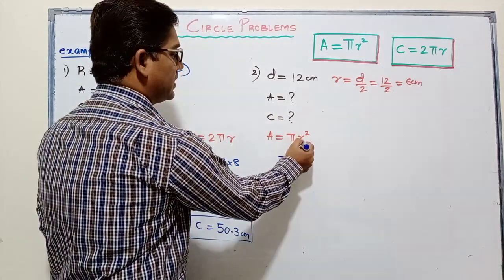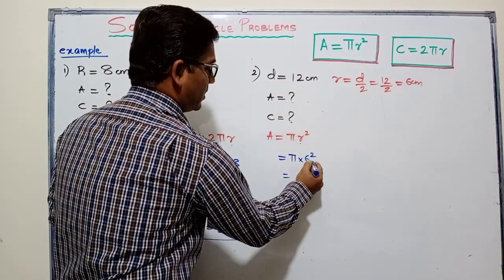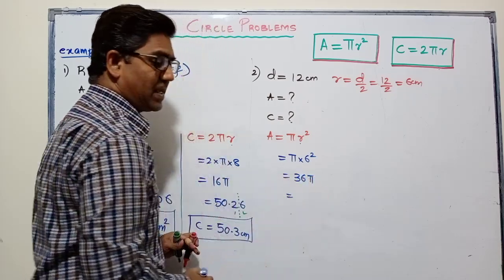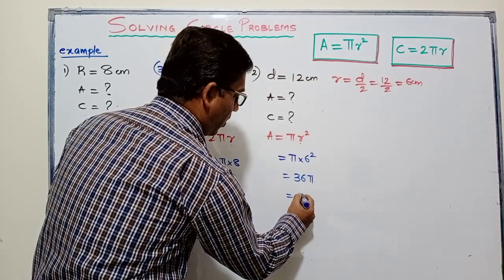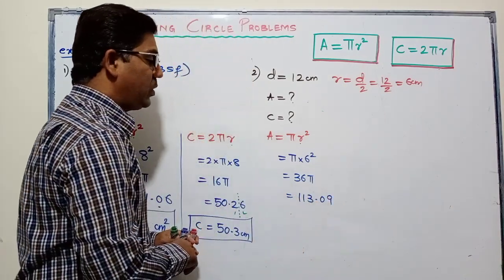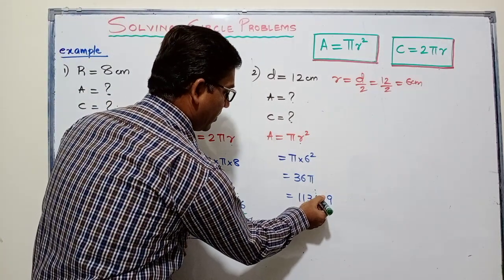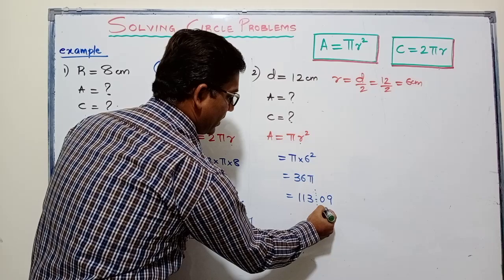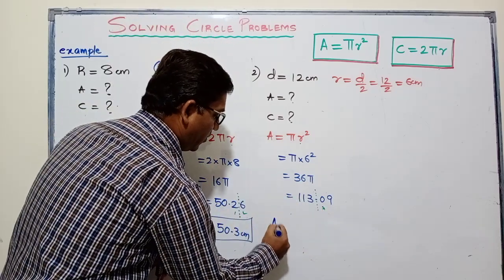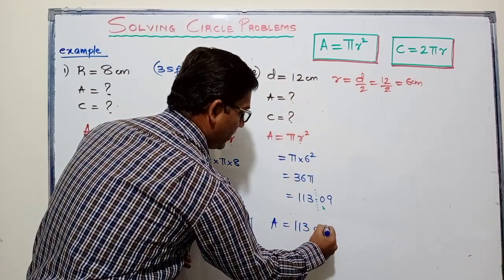In this example the radius is 6, so we calculate π × 6² = π × 36 = 36π. Type this in the calculator and you get 113.09. We need to round to three significant figures, so we need only the first three digits. The next digit is 0, which will not affect 3. So the final answer for area is 113 cm².